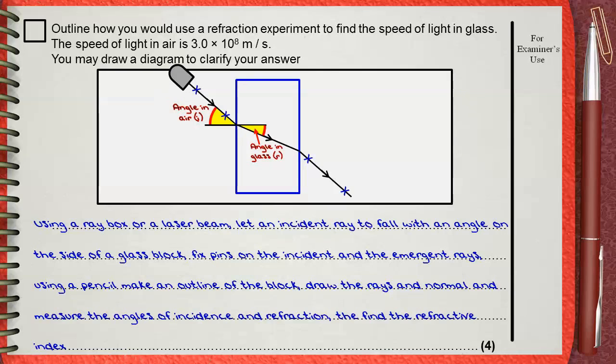Then find the refractive index. Refractive index equals sine the angle of incidence divided by sine the angle of refraction. After you calculated the refractive index,